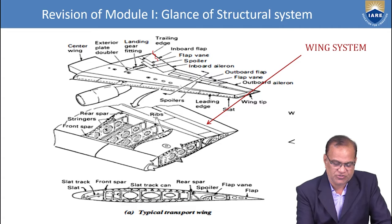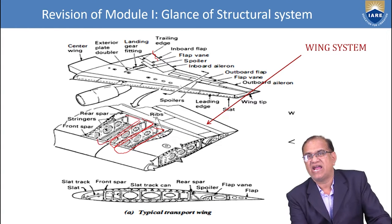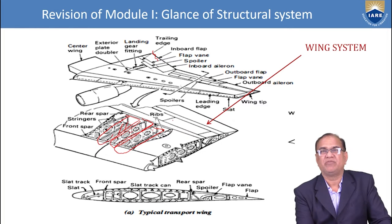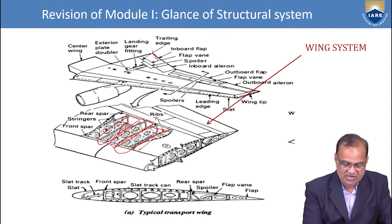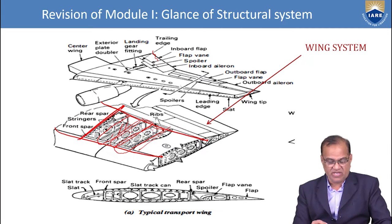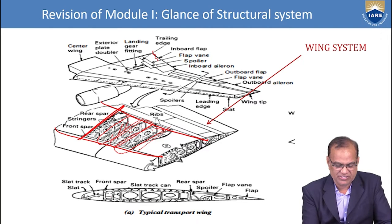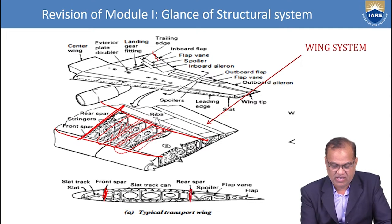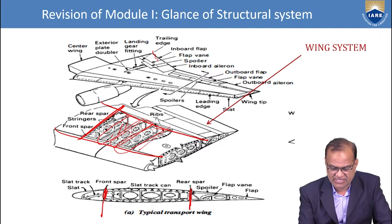If one control surface fails, another can work — that is the purpose of having both inboard and outboard surfaces. As you can see, there is a lot of vacant space inside the wing; we fix the fuel tanks inside this space between the ribs. These parts in the vertical direction are the ribs, and in the horizontal direction are the spars. Here you can see the slat track, front spar, and rear spar — two spars fixed in the aircraft keel.